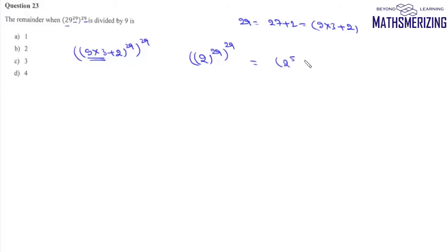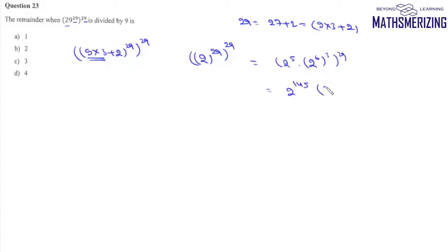So we write this as 2 to the power 5, times 2 to the power 24, which is 2 to the power 6, to the power 3, to the power 29. That gives 2 to the power 145 — since 29 times 5 is 145 — times 2 to the power 6, which is 9 times 7 plus 1, to the power 29 times 3. Since we need a multiple of 9, the remainder from that part is simply 1.